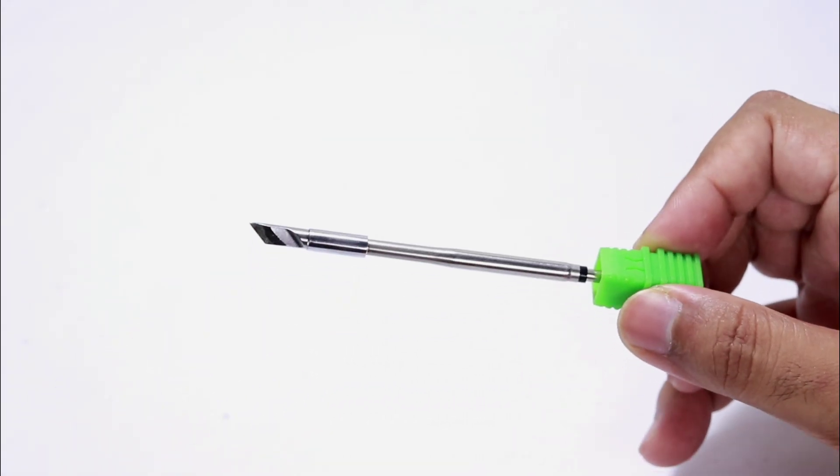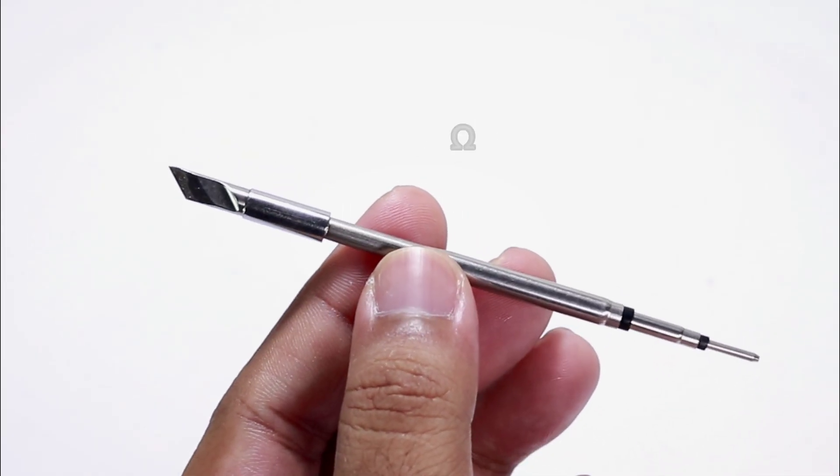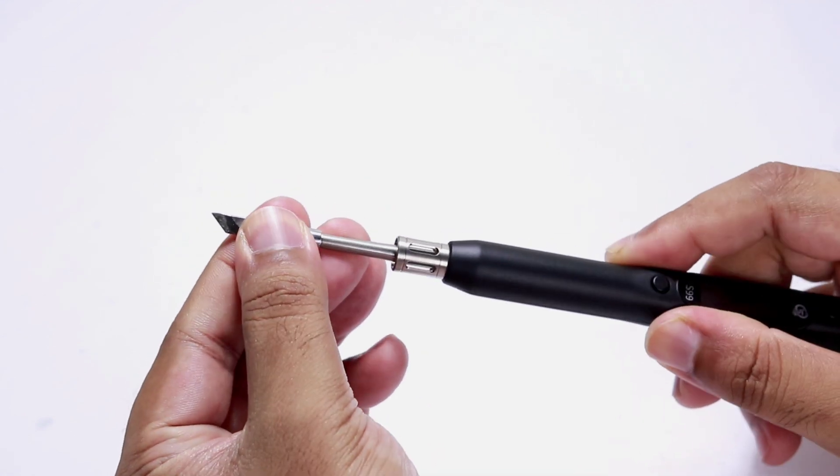Let's take a closer look at the soldering tip. It seems like it is a C245 type tip and just push it inward to install the tip.